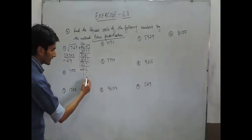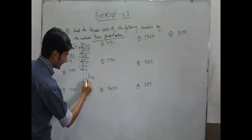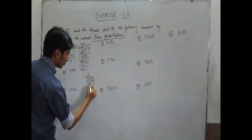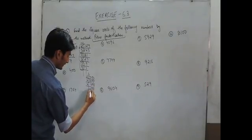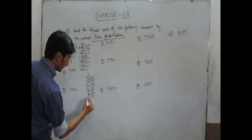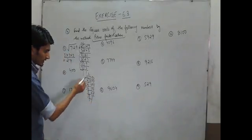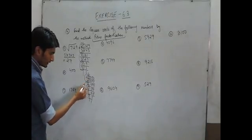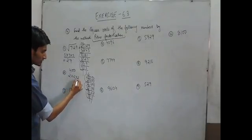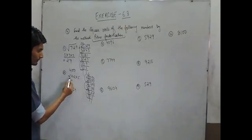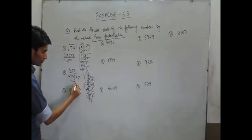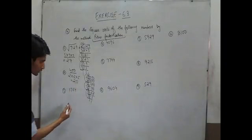Same case with 400. Firstly we have to find the prime factors of 400. Dividing by 2 gives 200, then 100, then 50, then 25, and 25 is 5 into 5 into 1. So in this case we get 3 pairs. Taking one from each pair and multiplying gives the square root, which equals 20.